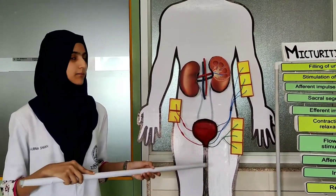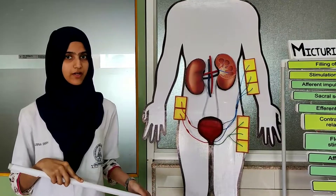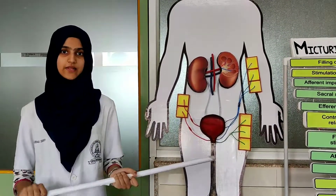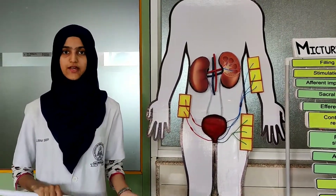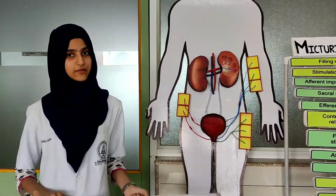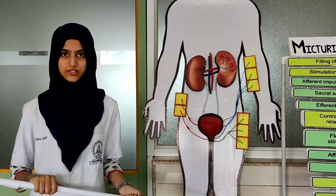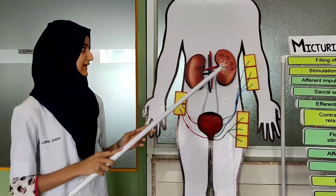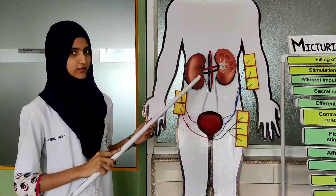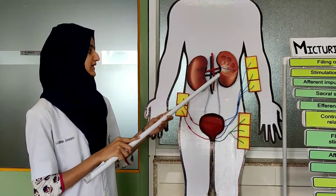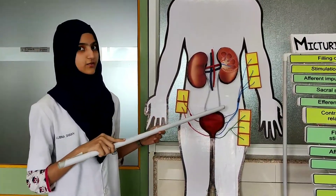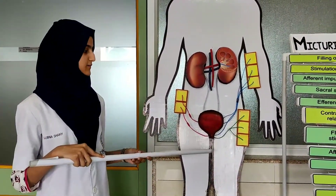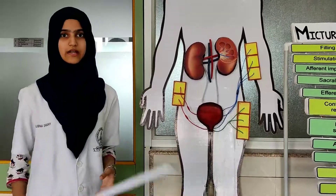In males, the urethra performs both functions — reproductive as well as urination — whereas in females, it only performs urination. In short, the kidney produces the urine, the ureter transports the urine, the urinary bladder stores the urine, and it comes out through the urethra.